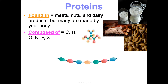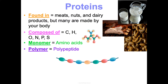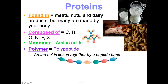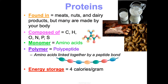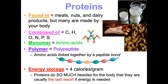Proteins are made of all six essential elements for life: carbon, hydrogen, oxygen, nitrogen, phosphorus, and sulfur. Their monomer is amino acids — there are 20 different amino acids that organize into polypeptide chains linked by peptide bonds. The polymer is called a polypeptide. Their energy storage is four calories per gram, just like carbohydrates. But because proteins do so many other things, they are a last resort for energy — broken down only after carbs and lipids.